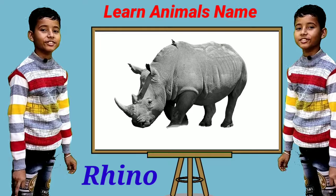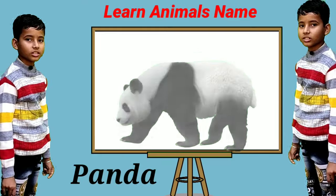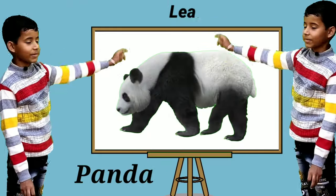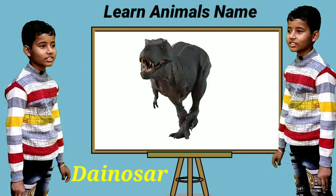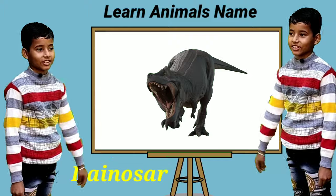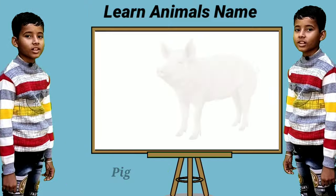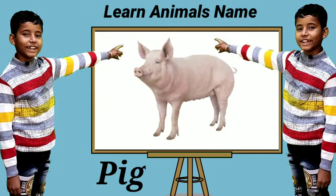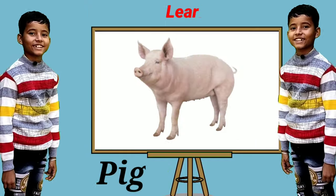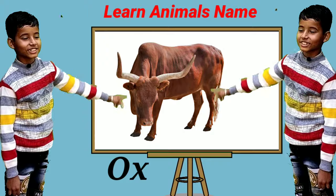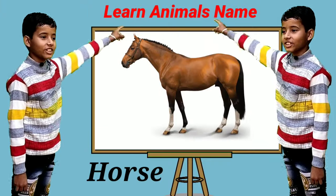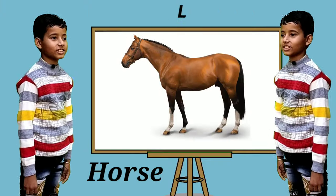This is a rhino. This is a panda. This is a dinosaur. This is a bean. This is an ox. This is a horse.